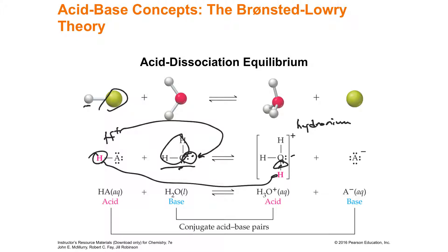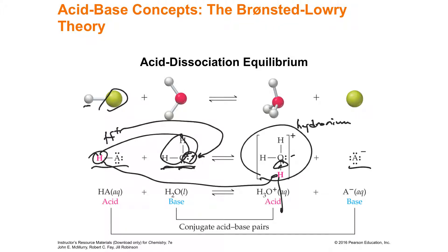The proton doesn't just react with one water molecule — it can react with many, so you could end up with clusters of two, five, or nine water molecules attracted to that proton. But we'll just call it hydronium. Whatever was left over after the proton transferred is the conjugate base of that acid. So you have the original acid, the original base — water acting as a base — and once transfer happens, you have the conjugate acid of water and the conjugate base of the acid.